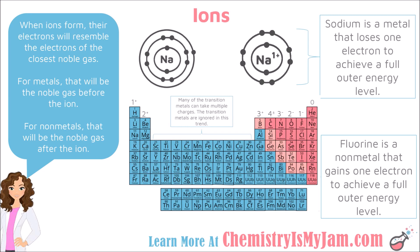Understanding this concept makes it easy if someone asks for the number of electrons in a certain ion. If asked how many electrons the phosphorus ion has, I know it will look like its nearest noble gas. Going to the right, I see argon, which has 18 electrons — so the phosphorus ion has 18 electrons. Barium is a metal; going left and up brings us to xenon, so the barium ion has 54 electrons.